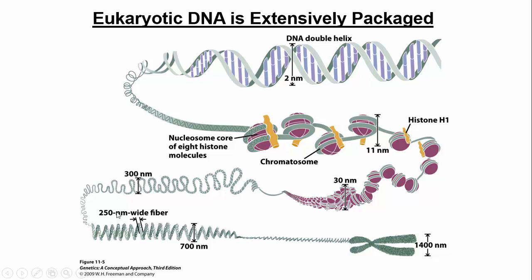After that, we get higher levels of compaction. I want you to focus on everything 30 nanometers and below — those are the dimensions I want you to know. Ultimately, once we get all the way up, we form a fully formed chromosome. What you're seeing is one duplicated chromosome in metaphase — either you'd say one chromosome, or you would say two sister chromatids, each being a mirror image of the other half.